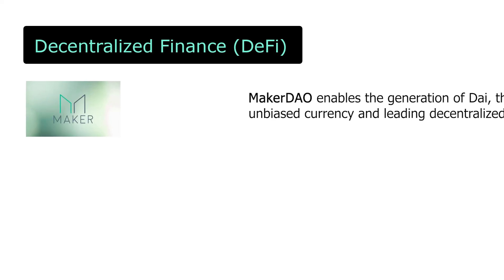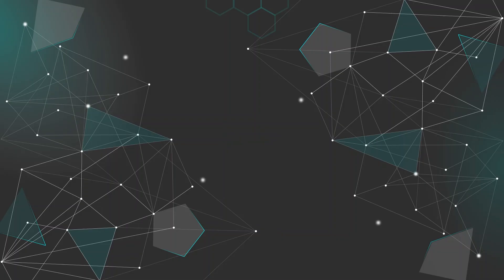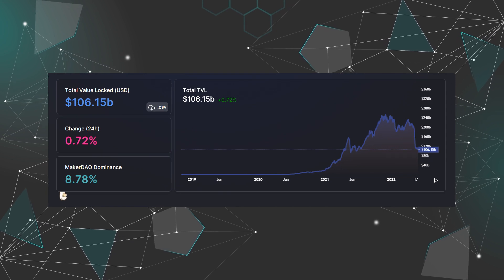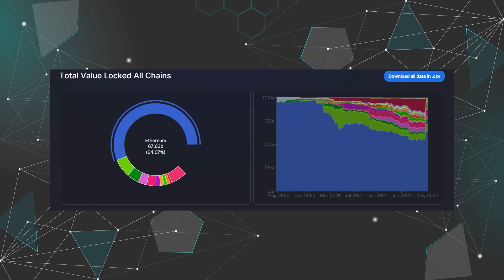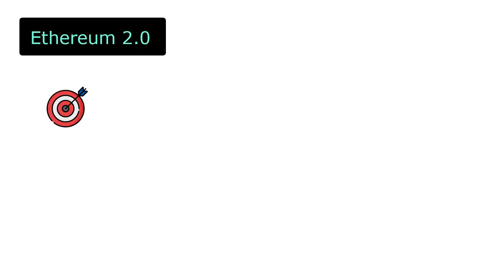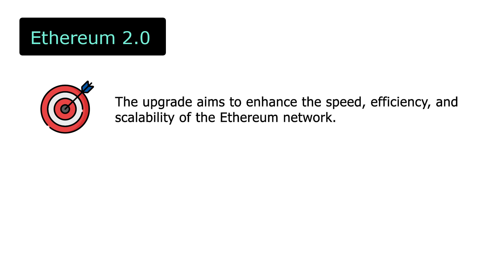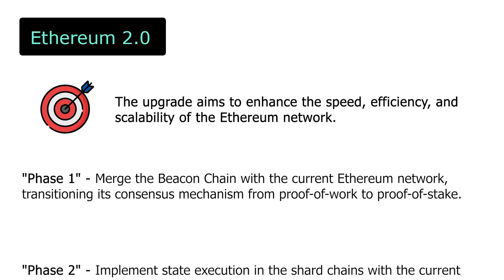A new trend called decentralized finance, or DeFi, began to dominate user traffic and transaction volume on many different blockchains. As of today, a total of $100 billion in value is being locked in many of these DeFi protocols. Currently, a major upgrade to Ethereum known as Ethereum 2.0 is under development, expected to release Phase 1 in the third quarter of 2022 and Phase 2 in 2023.